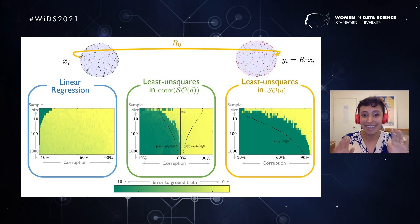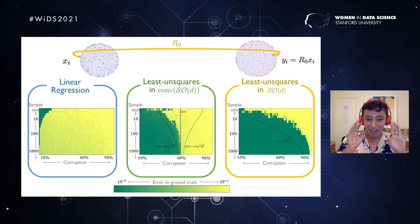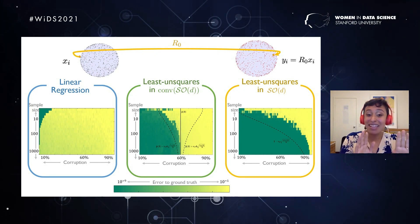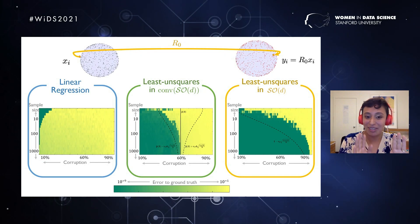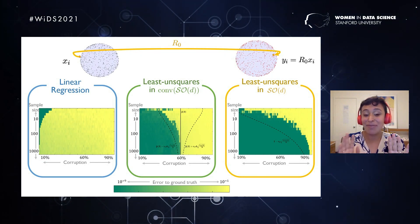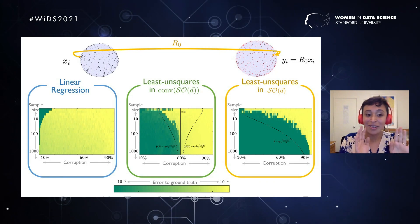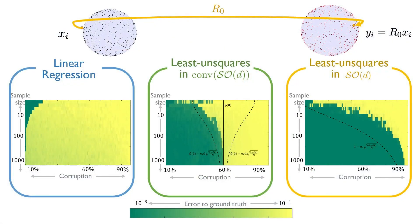In here, just for a quick observation, green means that you recover your rotation exactly, and yellow means that you have an error of 10 to the minus 1. So you will notice that for different sample sizes you have a completely different behavior between the three different algorithms. So not always increasing the sample size helps you to recover your rotation, and that goes a little bit counter-intuitive to what we always think, that a larger sample size will give us a better result. But all of this is numerical.